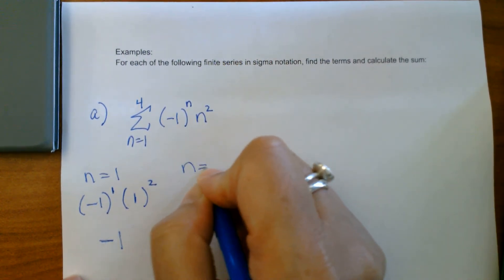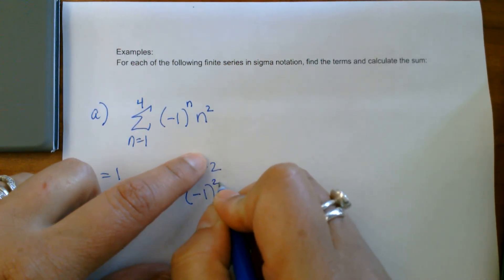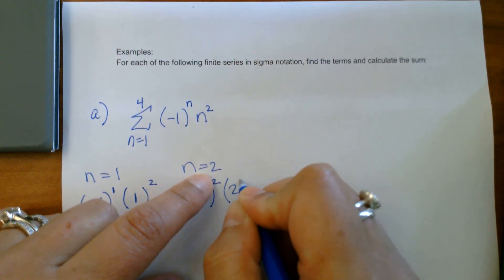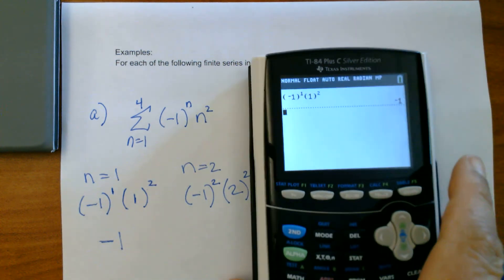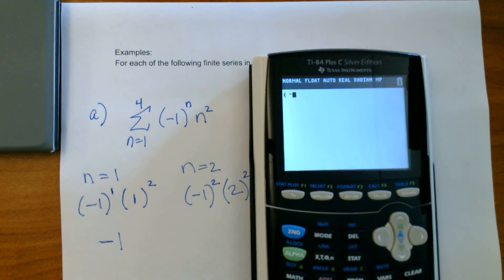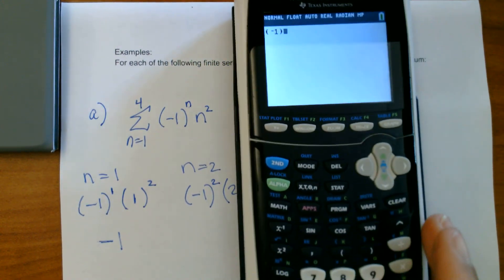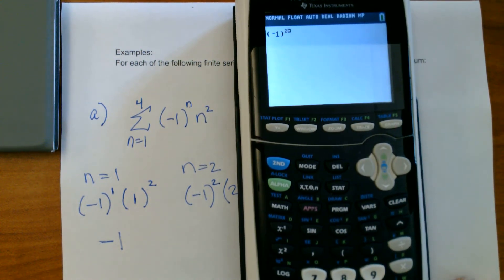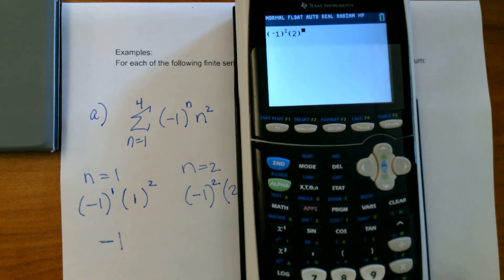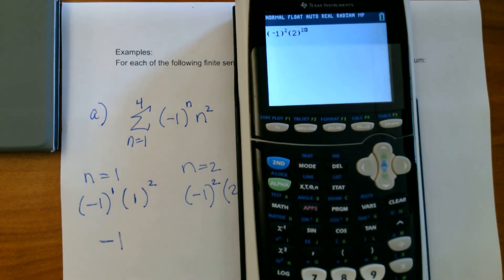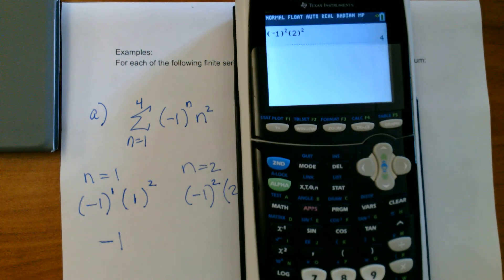Let's do n equals two: parentheses, negative one, raised to the second power, times two, raised to the second power. So where my n is, I'm putting in the number I'm supposed to be putting in. In the calculator, that is going to look like negative one — remembering the negative sign — then your exponent button, raising it to the power of two, right arrow key to get out of the exponent position, parentheses two, exponent button, two. This really limits mistakes because I want you to focus on how to do sigma notation and not order of operations. Press enter and we're going to get four.